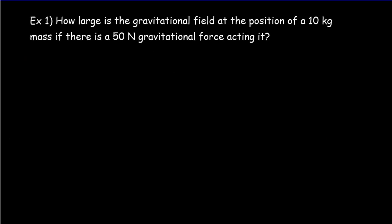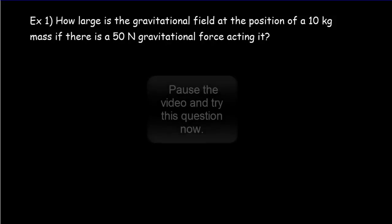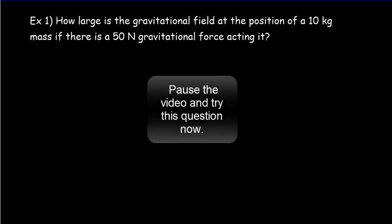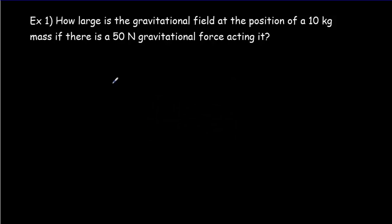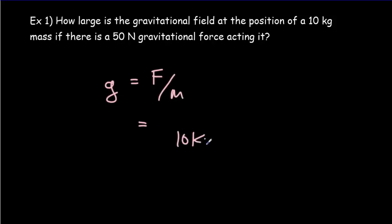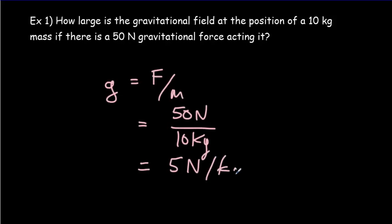Let's see if you understood the idea of a field being the force per fundamental quantity. This question is about the gravitational field, which is force per unit mass. We've got a 10-kilogram mass resulting in a 50-newton force. So the gravitational field strength must be 5 newtons per kilogram.